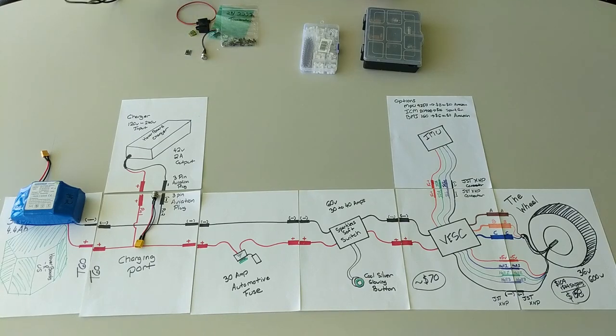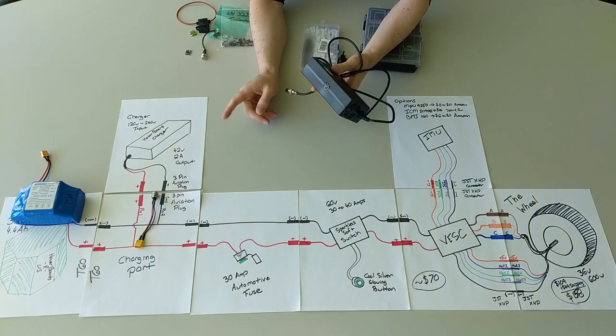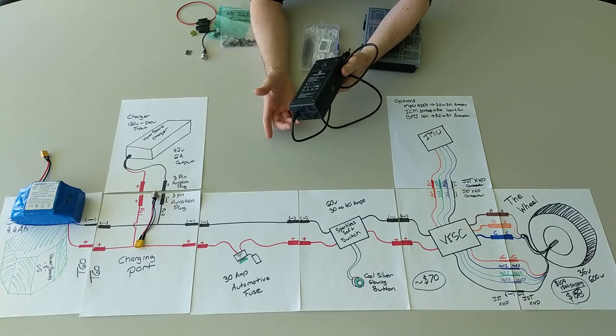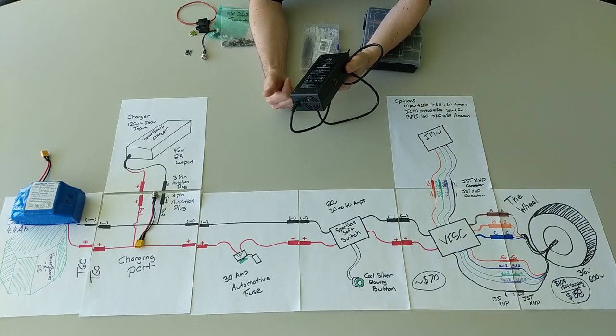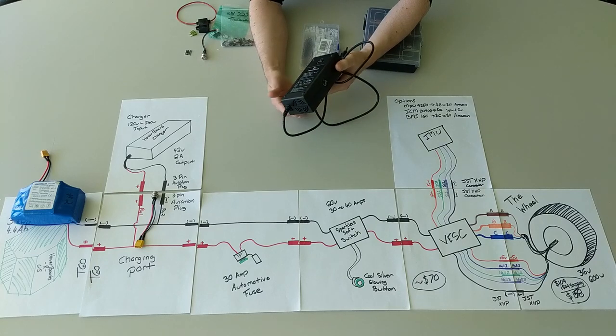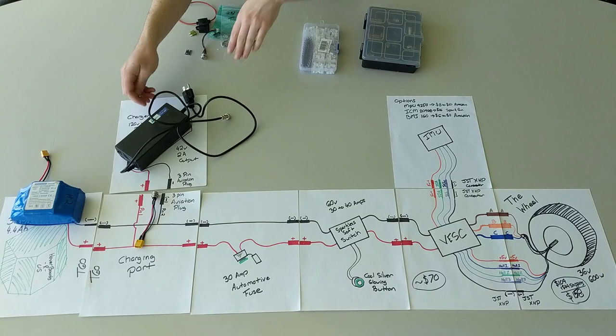That aviation plug was connected there, ultimately we'll splice this wiring to match the diagram. We have the charger which we now know works even though we did horrible things to it. The charger connects to that aviation plug to charge the battery. The charger takes 120 volts to 240 volts in from the wall. It outputs 42 volts at 2 amps and it can monitor the battery as it charges it.